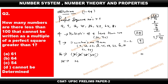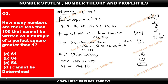Moving on to multiples of 25: they are 25, 50, and 75. None of these appear in the multiples of 4 or 9, so we take all 3. For multiples of 49: they are 49 and 98, giving 2 numbers.